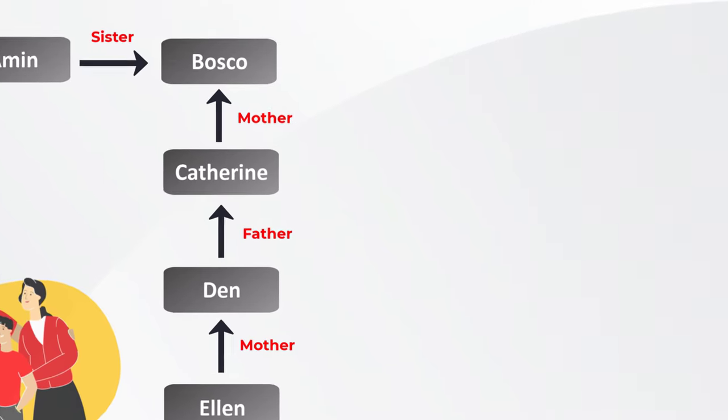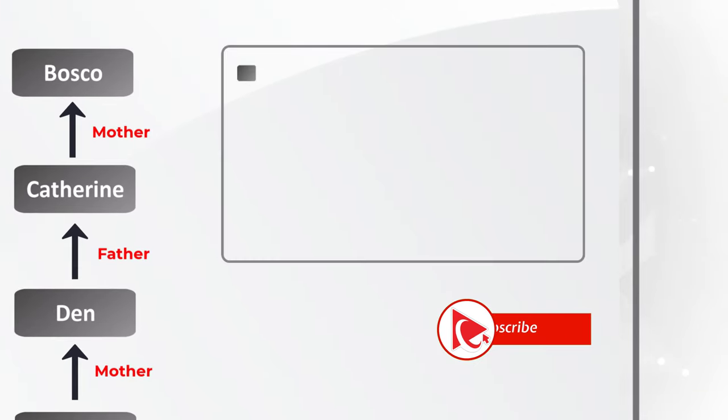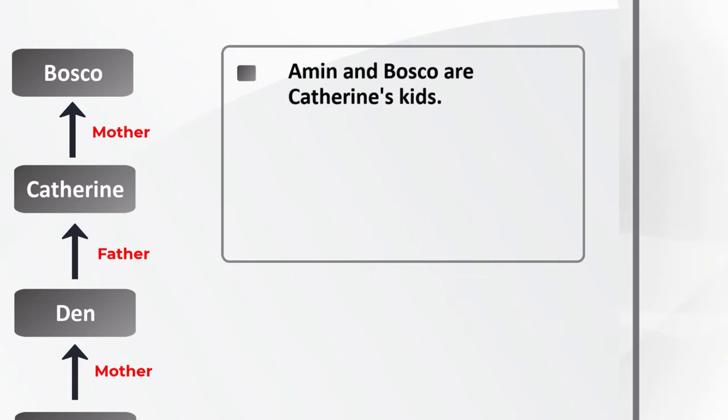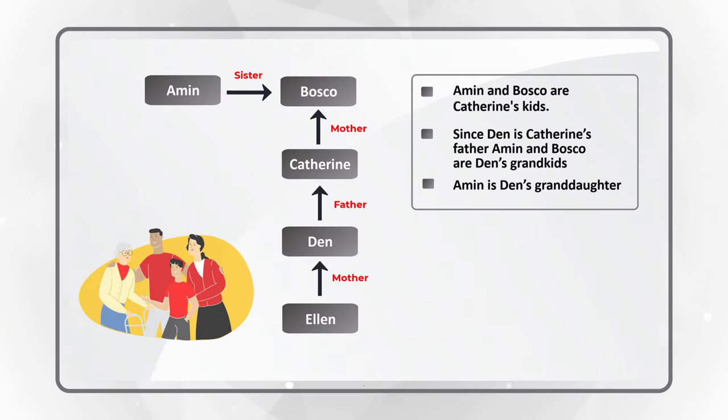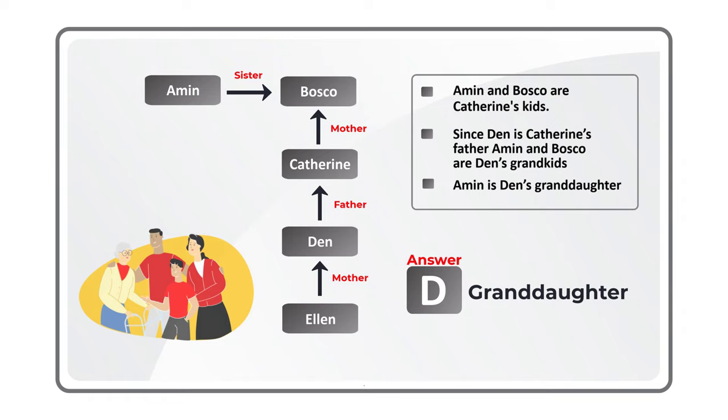Now let's look at the conclusions we can draw from this diagram. Amin and Baska are Catherine's children. Since Dan is Catherine's father, Amin and Baska are Dan's grandkids. Which means that Amin is Dan's granddaughter. So the correct choice here is choice D, Granddaughter. Hopefully you've nailed this question and now know how to diagram and solve similar problems on the test.